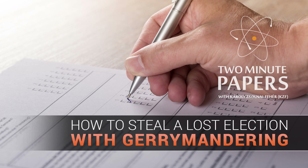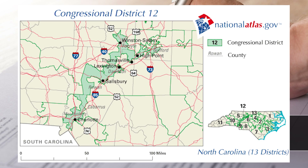Let's talk about the mathematical intricacies of elections. Here you can see the shape of the 12th congressional district in North Carolina in the 90s. This is not a naturally shaped electoral district — one might say this is more of an abomination.